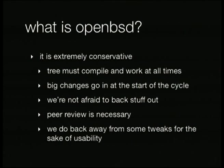We're also extremely conservative. Our tree must compile at all times. Because of the six-month cycle, we tend to put the big changes in at the start of the cycle and let them settle for four or five months. If something doesn't work, we don't wave our hands around — we just back it out and the person responsible for the change has to fix it before it goes back in. Having a working tree is extremely important to us.